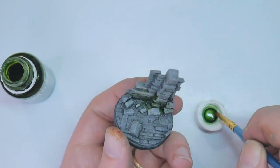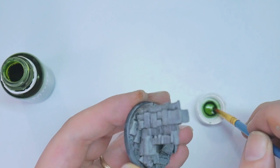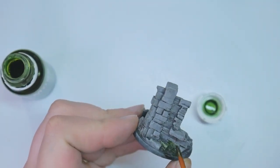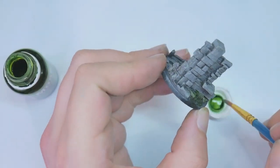After the acrylics dried, I gave the base an all-over wash with Abteilung 502's Starship Filth. It's a nice green-gray that does really nicely for making things, well, filthy.